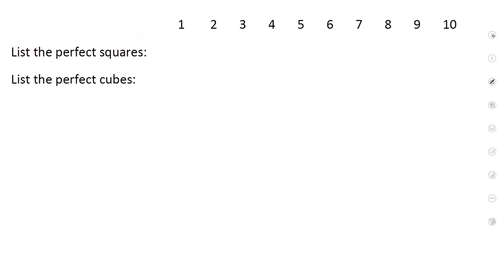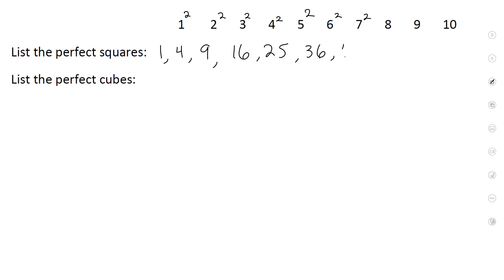Before we move on to solving, let's create a list. I have the numbers one through ten. If I were to square all of these, let's write down the perfect squares. Squaring one gives one, two gives four, three gives nine, four gives sixteen, five gives twenty-five, six gives thirty-six, and so on: 49, 64, 81, 100.